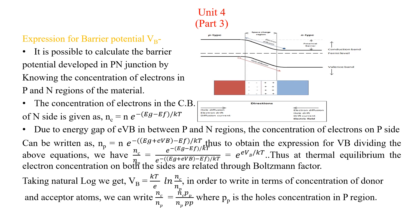As this energy barrier height is created, the majority charge carriers of the two sides are not able to overcome it, and hence there is no current in the device. In forward bias, the energy barrier height reduces by an amount eV, where V is the external voltage, so majority charge carriers can overcome it and current flows due to majority charge carriers. In reverse bias, the energy barrier height increases to eVb plus eV, so majority charge carriers cannot flow, but minority charge carriers can fall onto the other side, giving current due to minority charge carriers.